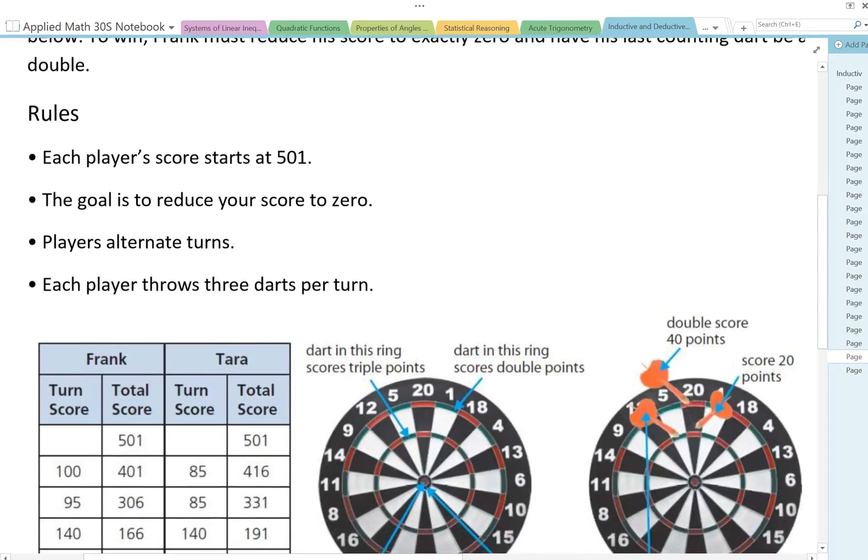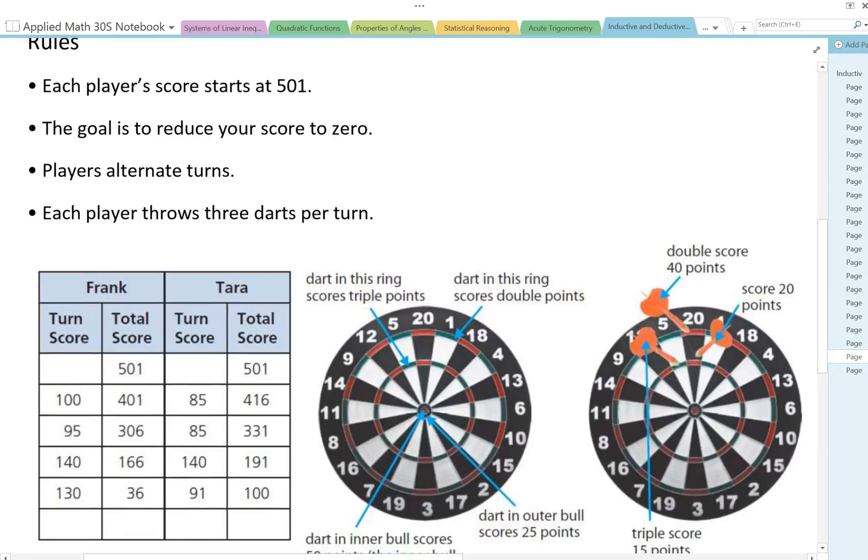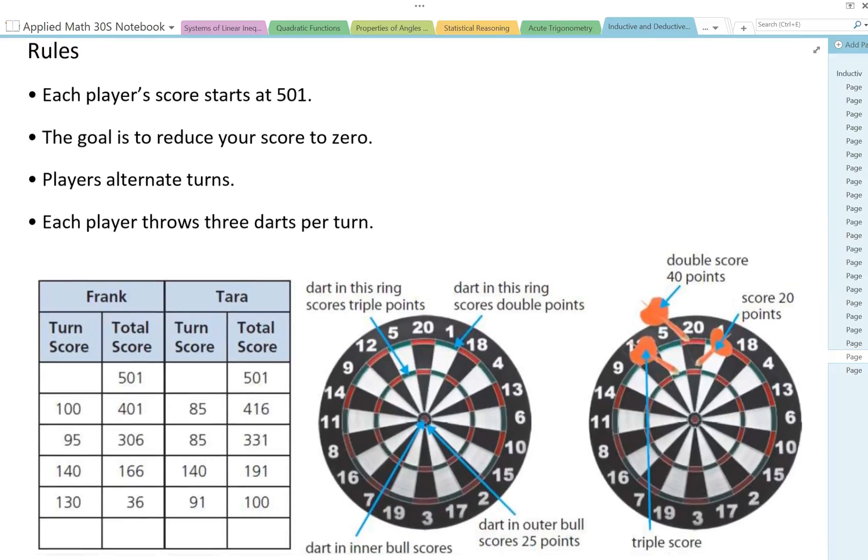So what does that mean here? Here are the rules. Each player's score starts at 501. So everyone starts with 501 and your goal is to reduce your score to zero.